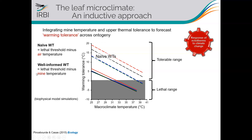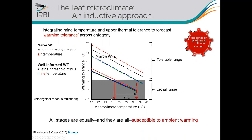Instead of air temperature, we need to use the temperature within the mine — the macroclimate temperature. This is the well-informed warming tolerance. The result is very different: all stages cross the dangerous threshold at essentially the same temperature, and that temperature is very low — about 31–32°C — which is at least seven degrees lower than the naive approach predicted. Surprisingly, despite large differences in thermal limits and macroclimatic conditions across stages, all life stages are equally susceptible to ambient warming.